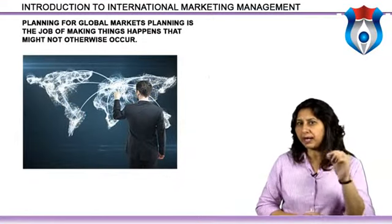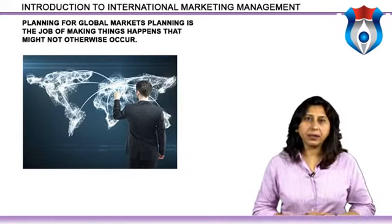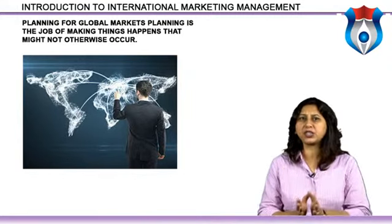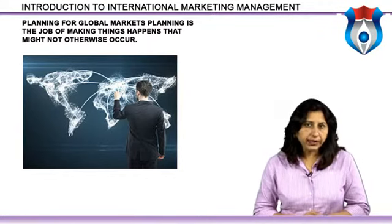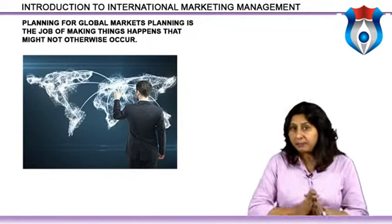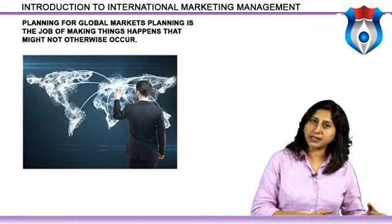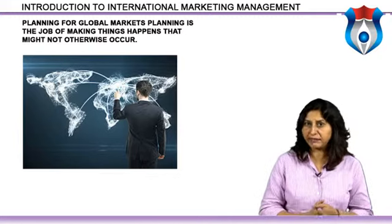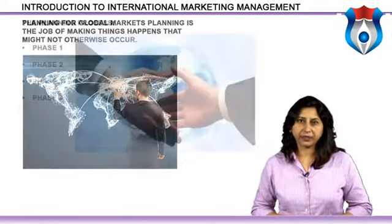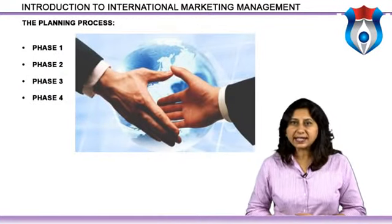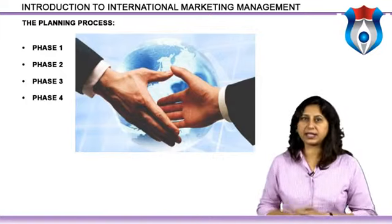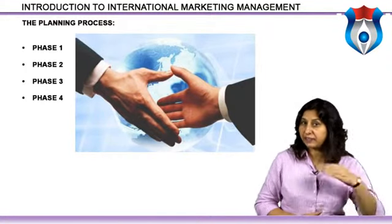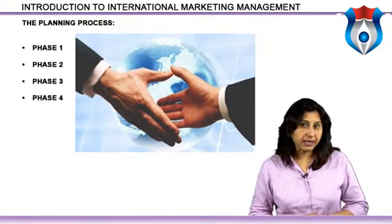Planning is the job of making things happen that might not otherwise occur. Planning allows for rapid growth of the international function, adapting to changing markets, increasing competition, and the turbulent challenges of different national markets. Planning relates to the formulation of goals and methods of accomplishing them — it is both a process and a philosophy. Successful planning involves evaluating company objectives including management's commitment and philosophical orientation to international business. The phases are: Phase One — preliminary analysis and screening, matching company and country needs; Phase Two — adapting the marketing mix to target markets; Phase Three — developing the marketing plan; Phase Four — implementation and control.